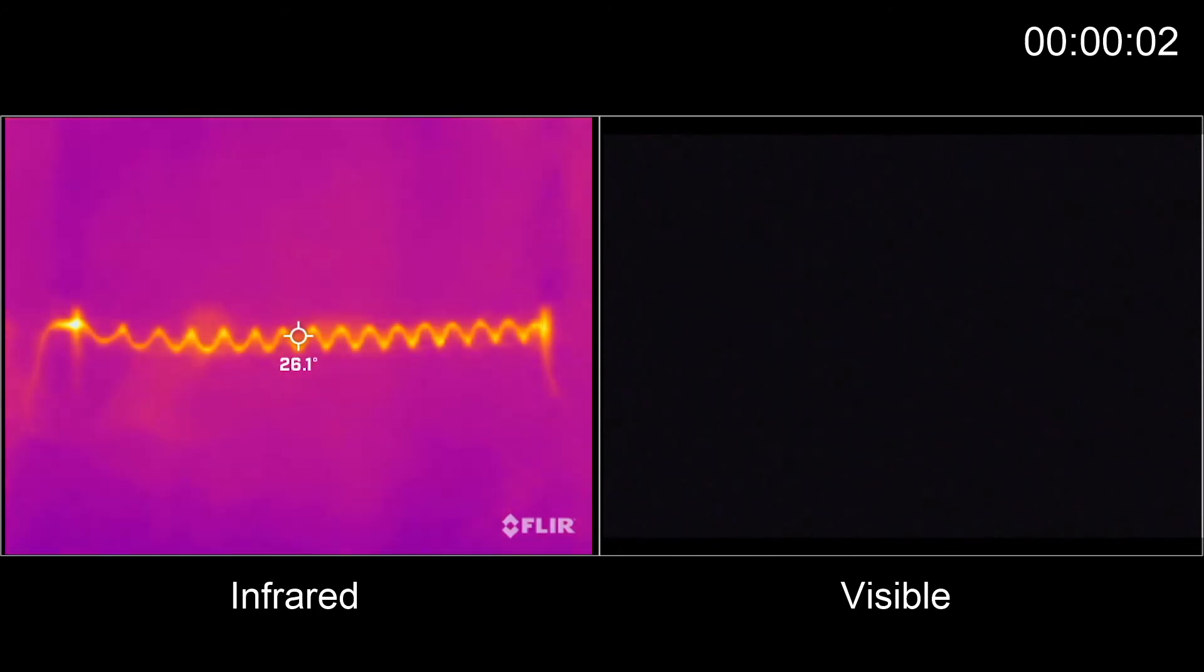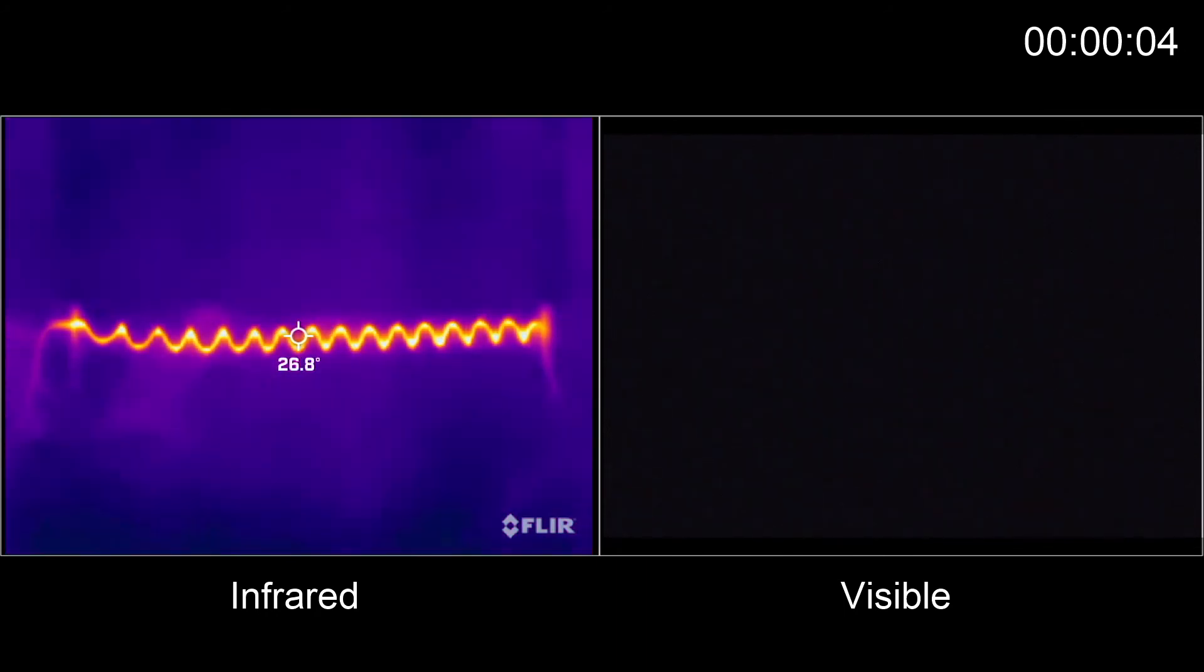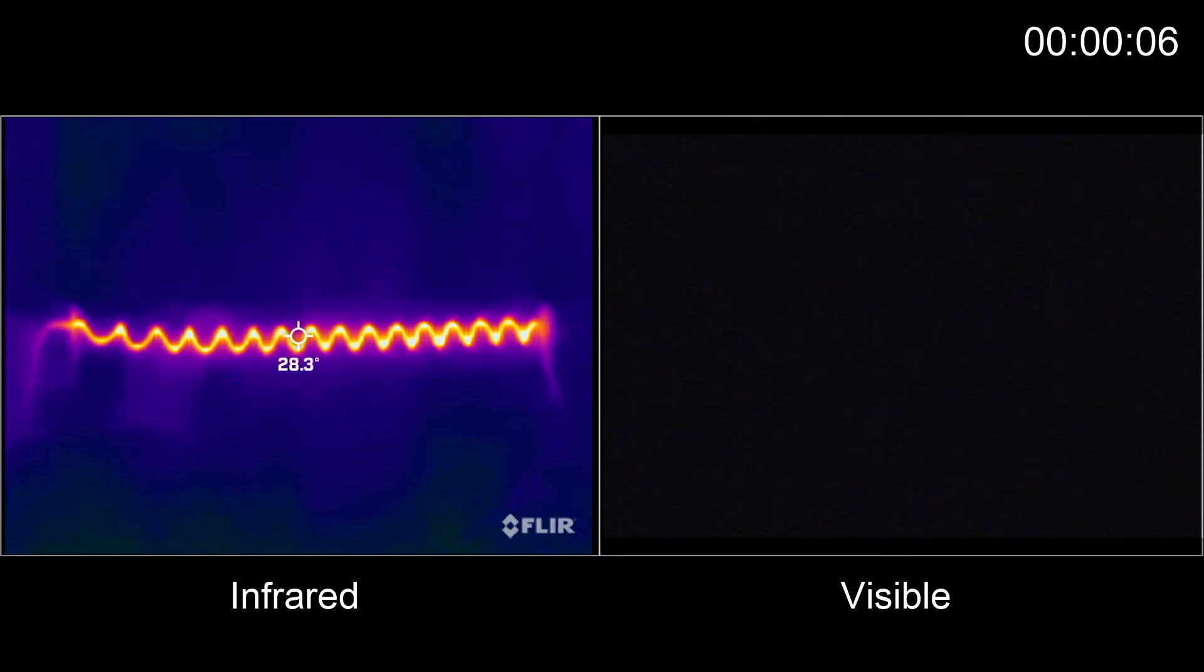As we run current through the wire, it heats up and glows in infrared light. As the current is increased, the temperature rises and the light shifts to higher energies and intensities. Eventually, the coil is hot enough to also glow in visible light.